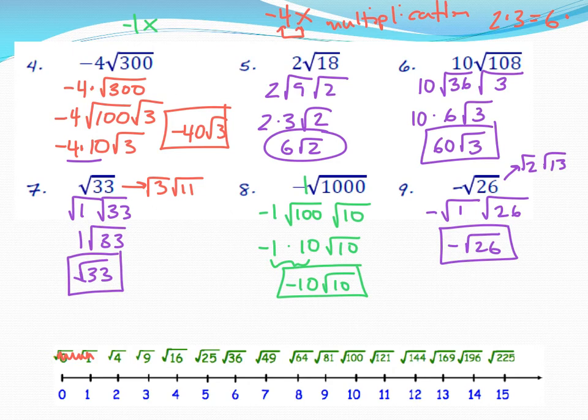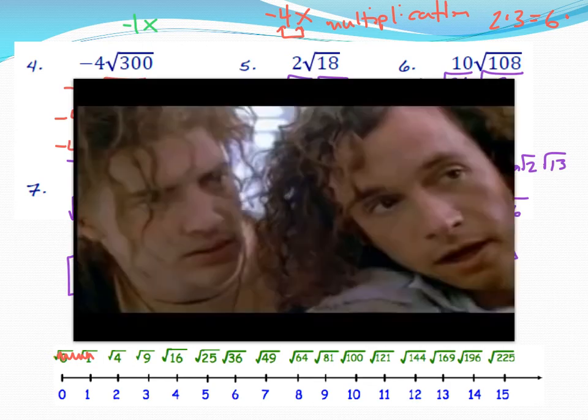This is all on simplifying radicals. Make sure you get to know the perfect squares list and the perfect square number line. Use it on your practice problems, and make sure you know it cold by the mastery check so you're the master at it. In the spirit of radicals, here's a short clip from the movie Encino Man from the 90s, when 'radical, man' was used a lot.